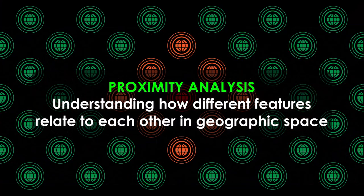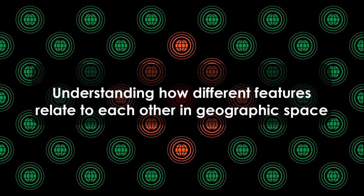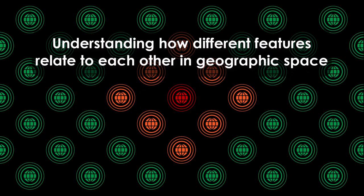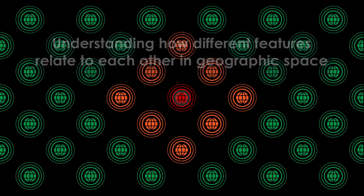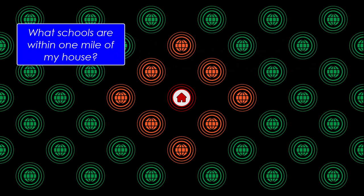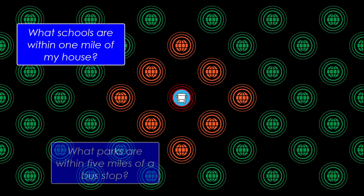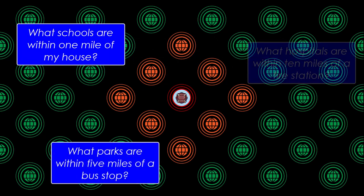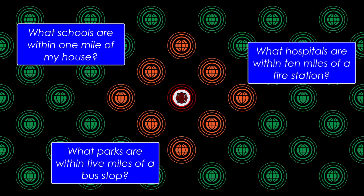Proximity analysis allows us to understand how different features relate to each other in geographic space. It involves examining the spatial relationships and distances between features. It can help answer questions like: where are all the schools within one mile of my house? What parks are within five miles of a bus stop? What are the hospitals within 10 miles of a fire station?